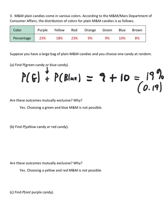Are these outcomes mutually exclusive? Yes. Choosing a green and blue M&M is not possible. Because, remember, you're only going to choose one candy at random. That's the catch.